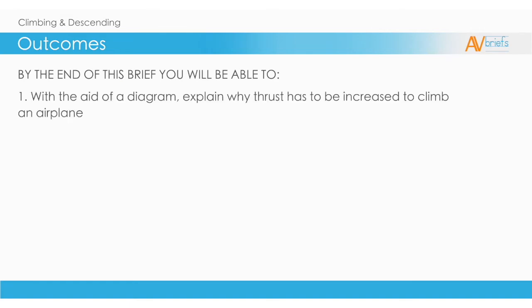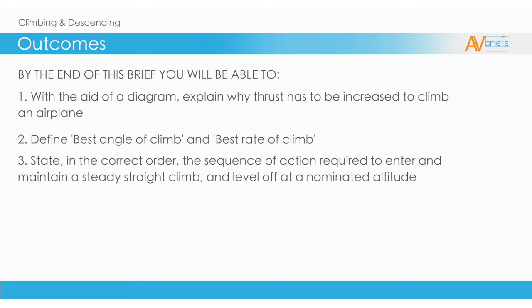By the end of this lesson you will be able to, with the aid of a diagram, explain why thrust has to be increased to climb an airplane. Define best angle of climb and best rate of climb. State in the correct order the sequences of actions required to enter and maintain a steady straight climb and level off at a nominated altitude.